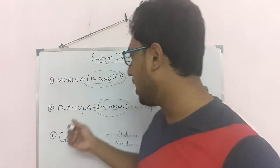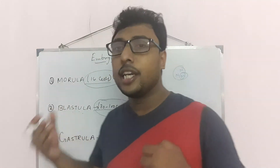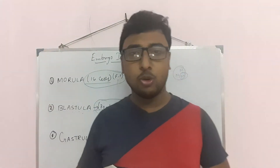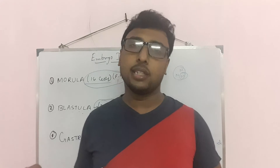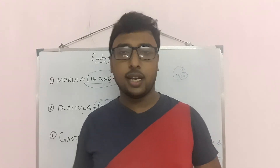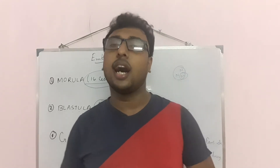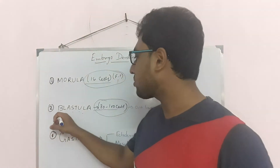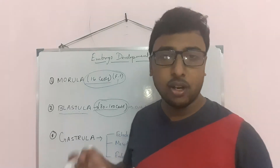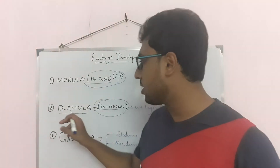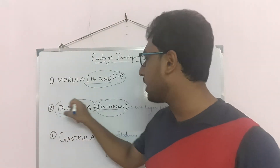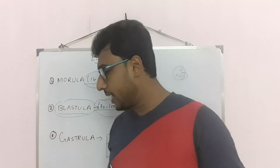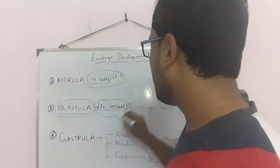Blastula is the second stage of cleavage. The morula travels from the fallopian tube into the uterus, is implanted in the dorsal wall of the uterus, and then the blastula forms within the uterine wall after implantation.